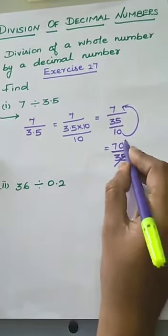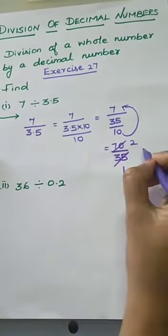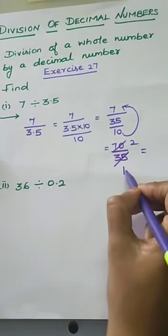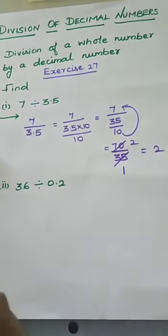35 goes into 70: 35 times 2 is 70, remainder 0. The denominator value 1 has no value, so directly we take the answer as 2.